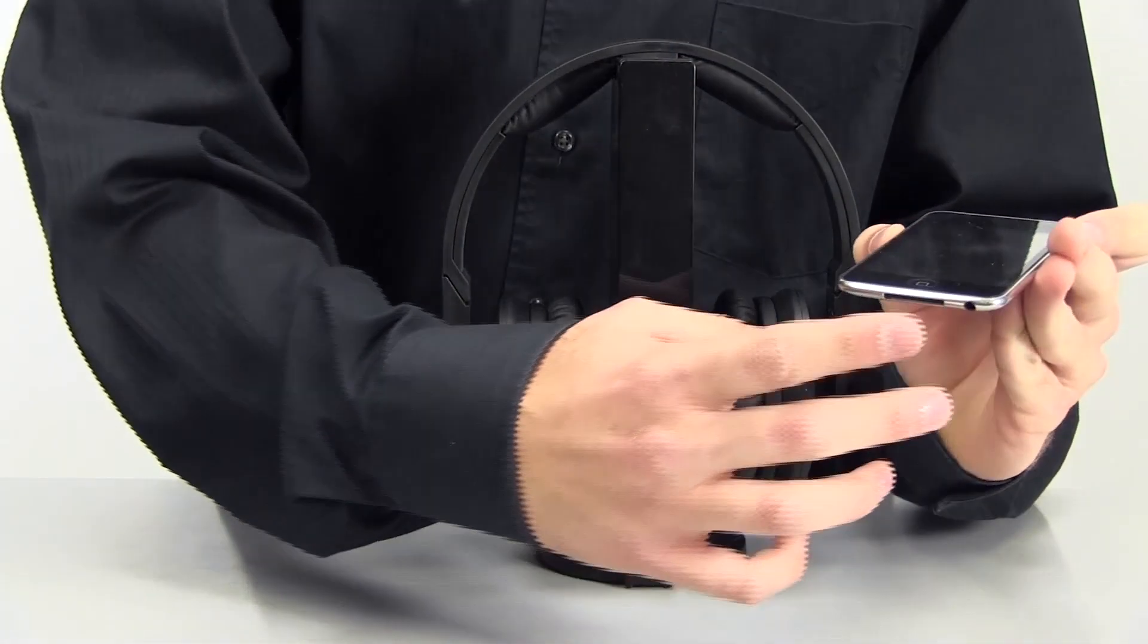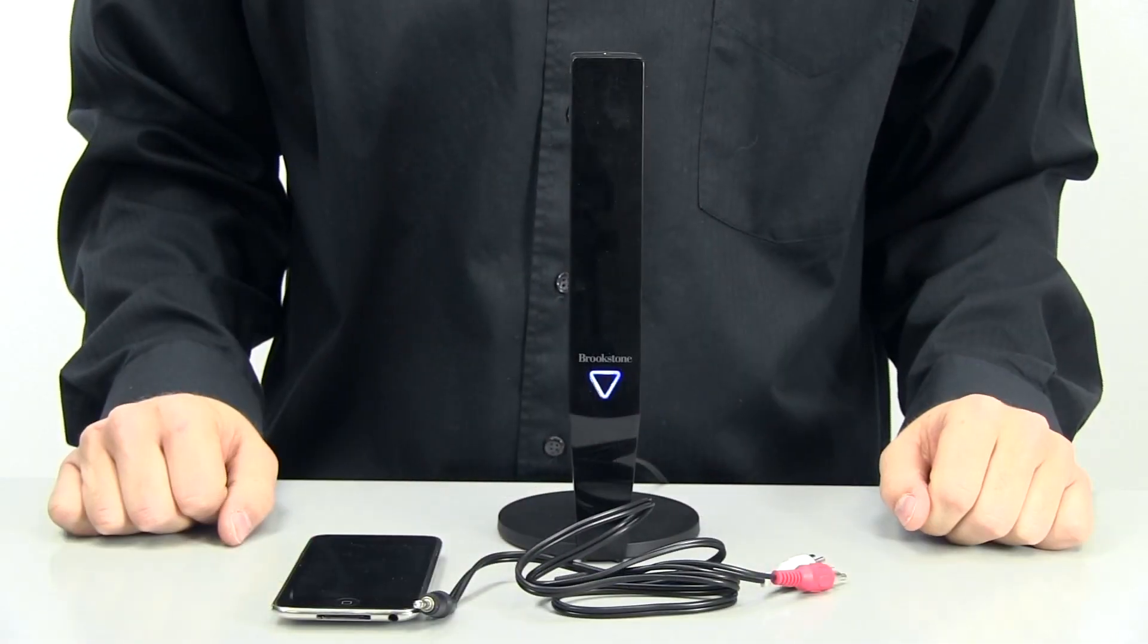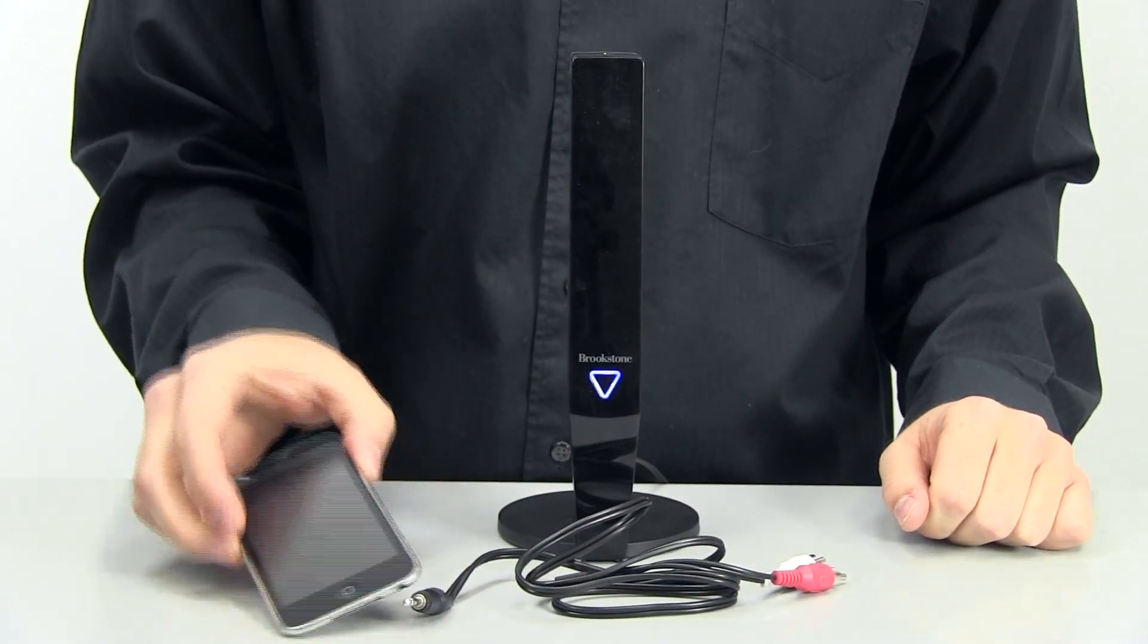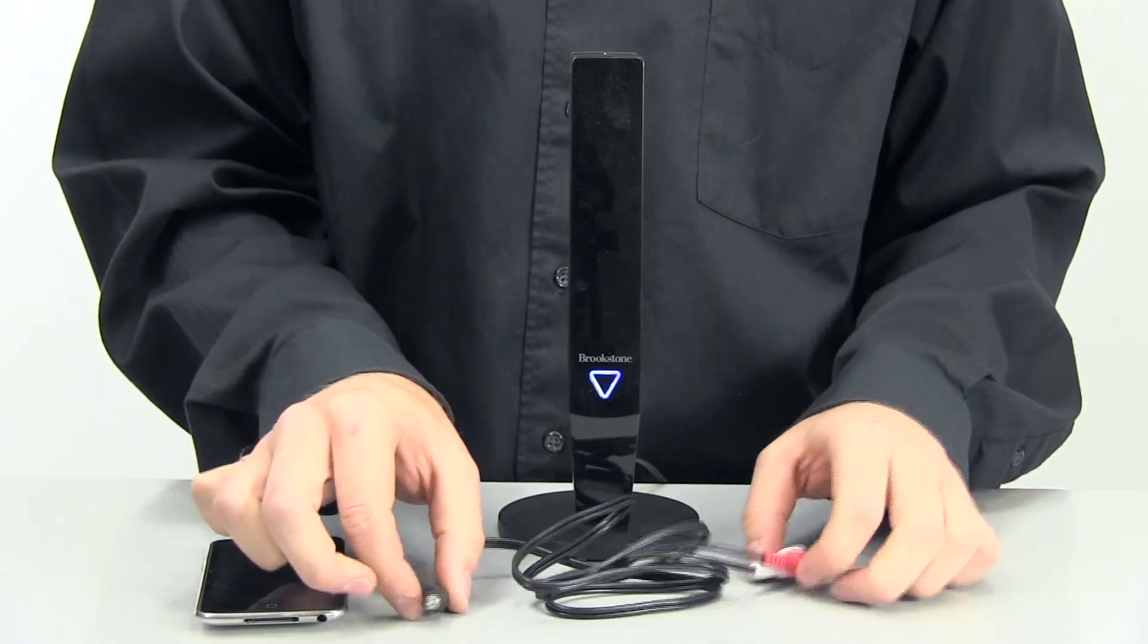If you're going to connect the transmitter to a device that uses a 3.5mm connection, this is what you need to do. You will follow the same steps up until when you are connecting the transmitter to the audio device. In this instance, we are connecting the transmitter to an iPod.